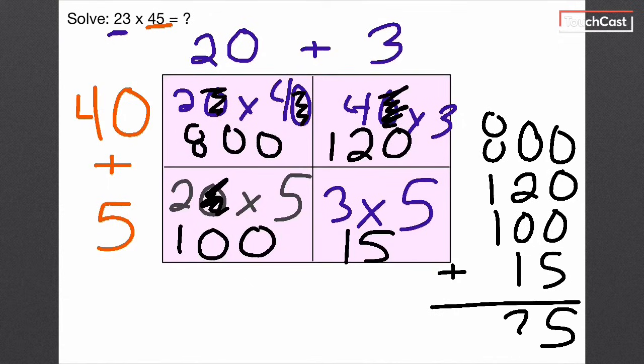Add all of these up. 5, 3, 10. Put my comma in. Now I know that all of this, the solve 23 times 45, actually equals 1,035.